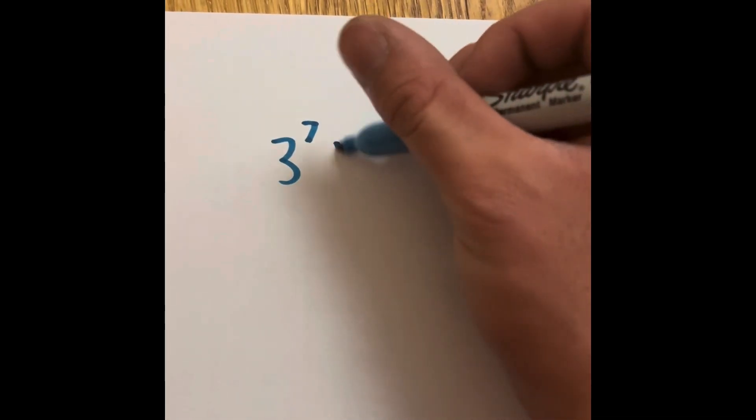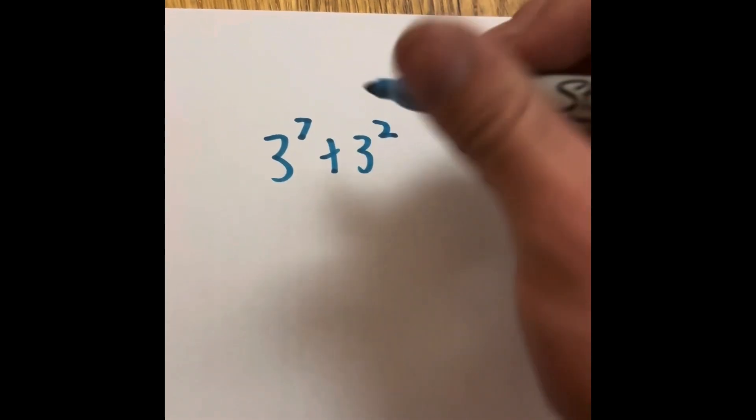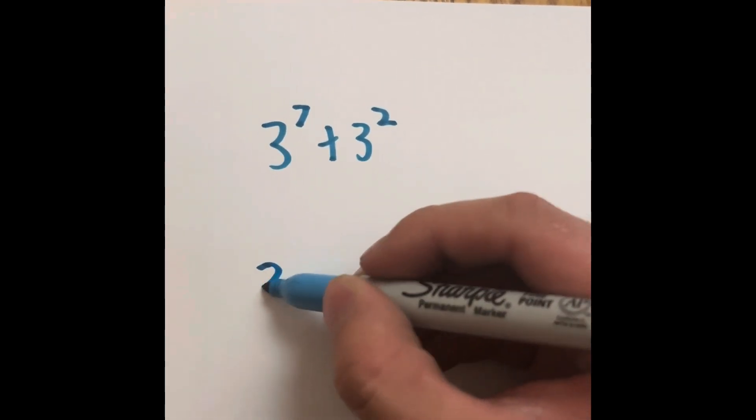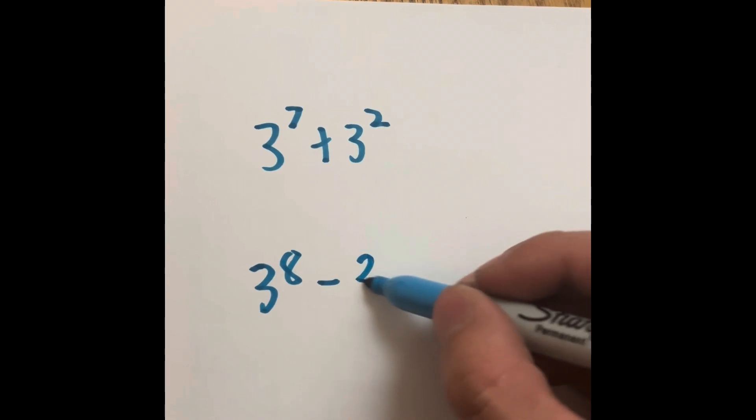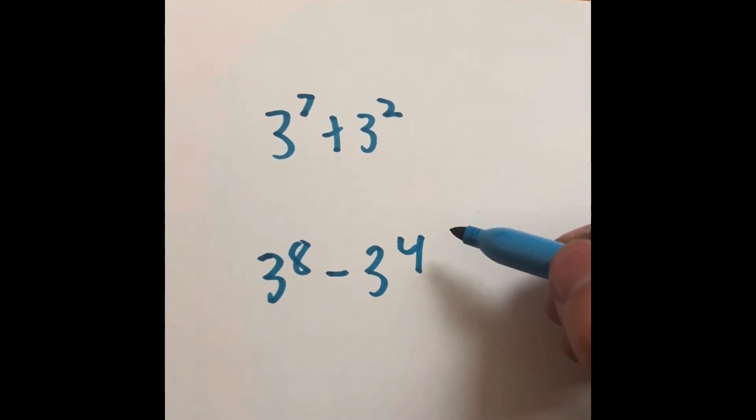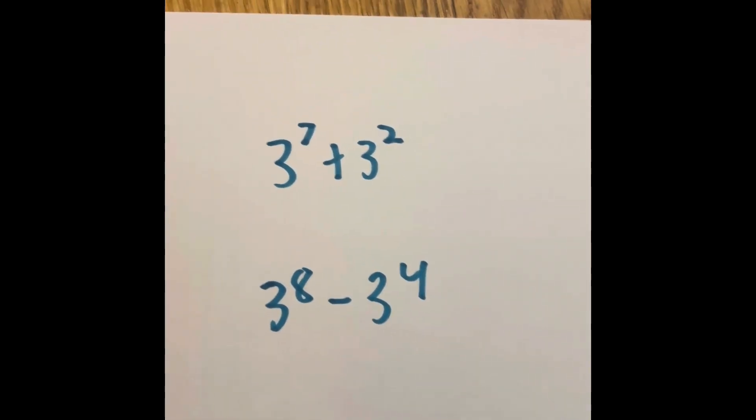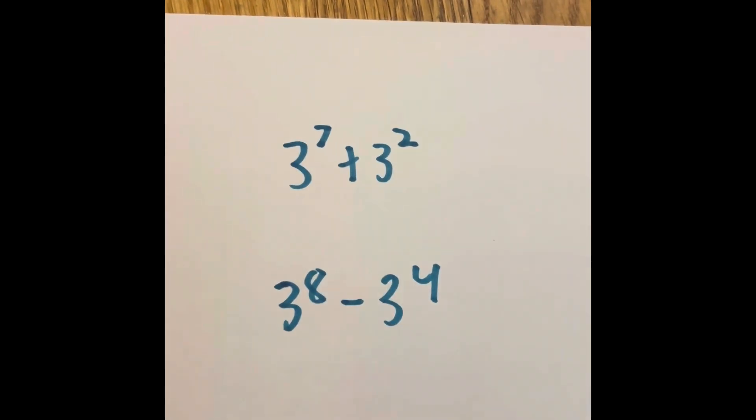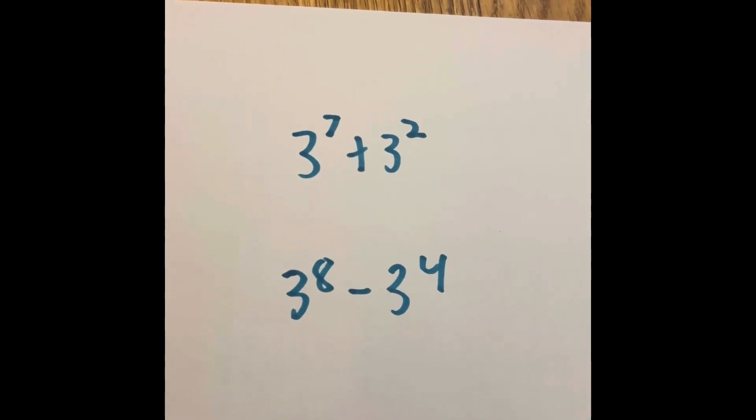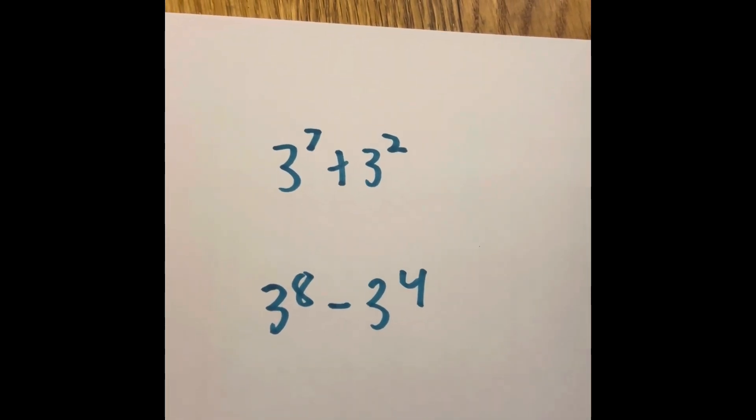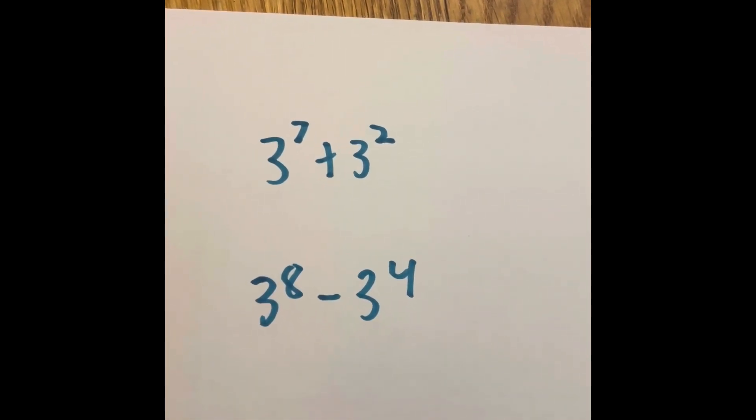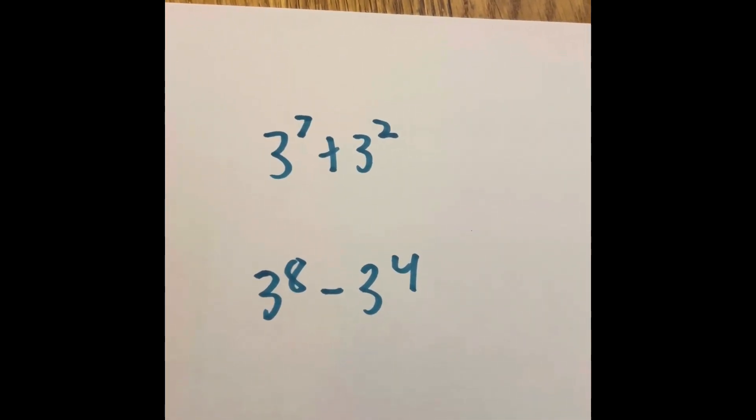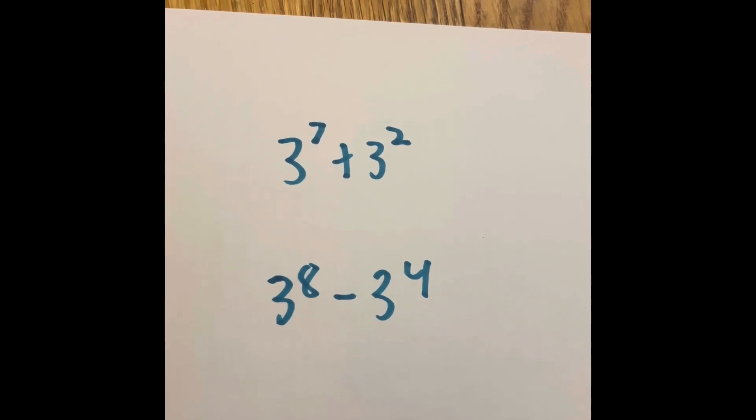But what happens if you try to add or subtract these exponents, like 3 to the 7th plus 3 to the second? Or what happens if we do 3 to the 8th minus 3 to the 4th? Well, what you would have to do is put them in its actual number form and actually simplify them out, which means there's no really any shortcut to do without using a calculator to add or subtract exponents. So that isn't really a shortcut.